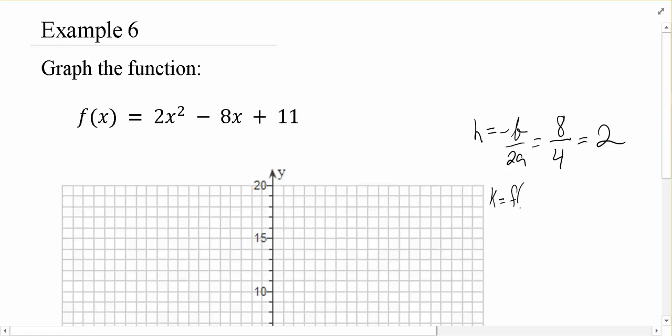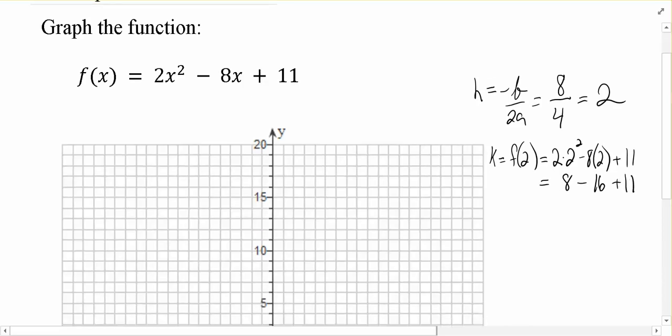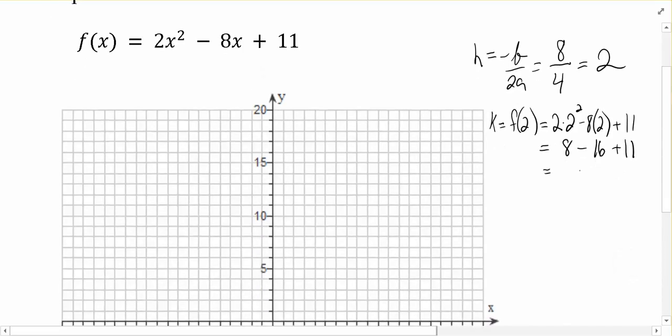The y value is going to be to plug 2 back in. So, that's 2 times 2 squared minus 8 times 2 plus 11. That's going to be 8 minus 16 plus 11. 8 minus 16 is negative 8, and negative 8 plus 11 is 3. This gives me a vertex of 2, 3.